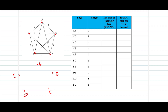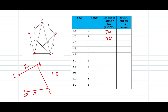Now let's execute the algorithm. There are five vertices so we run it four times. AE equals 2: we connect A to E — it doesn't form a circuit, so yes, we add it. CD equals 3: we connect C to D — it doesn't form a circuit, so yes, we add it. Two edges added. Next, AC equals 4: we connect A to C with weight 4 — it doesn't form a circuit, so yes, we add it. Three edges added. Next, CE equals 4.